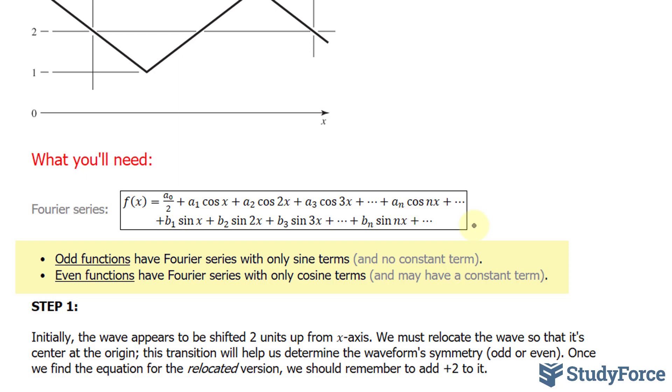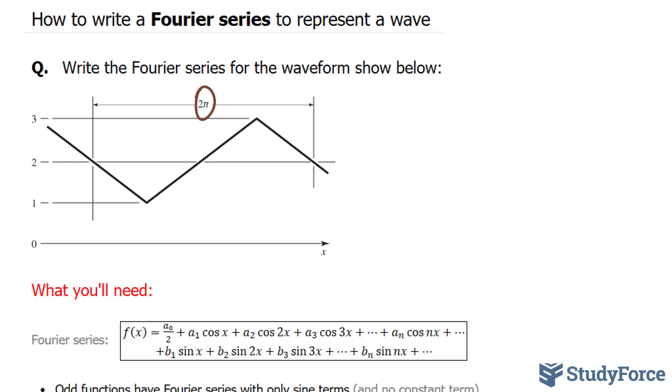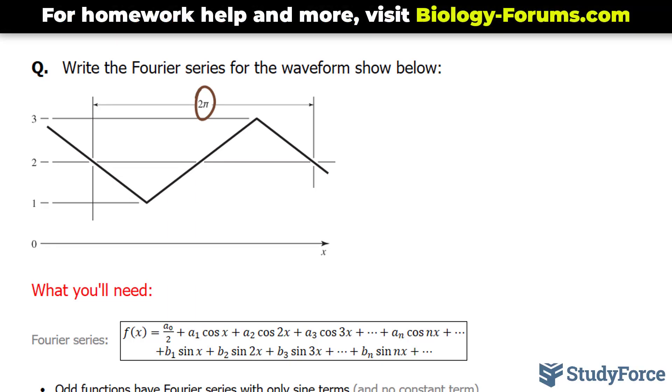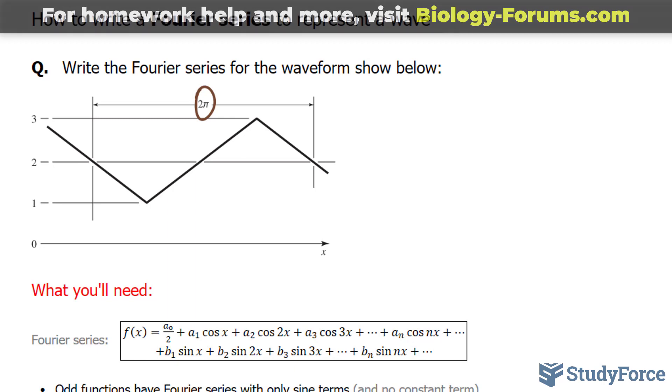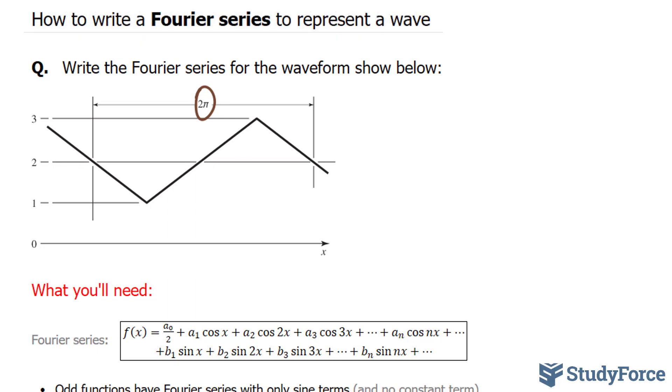Even functions have Fourier series with only cosine terms, and may or may not contain a constant term. So we have to determine if this function, through our observations, is odd or even. Normally to do that, we look at the symmetry. If it's only symmetrical about the y-axis, then it's even. If it's symmetrical about both, then it's odd. We'll determine that in a moment.